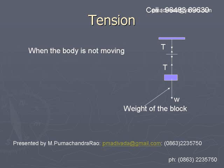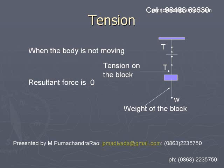When the body is not moving, and we consider the block, it is acted on by two forces — its weight in the downward direction and tension in the upward direction. Because it is not moving, the net force on this body is zero.